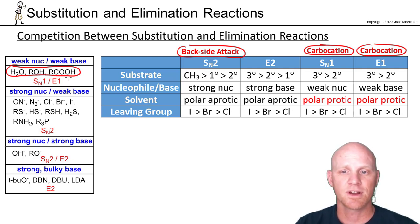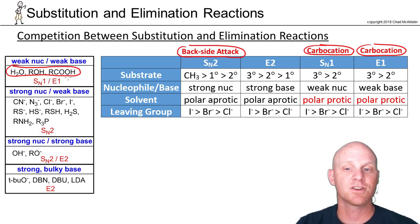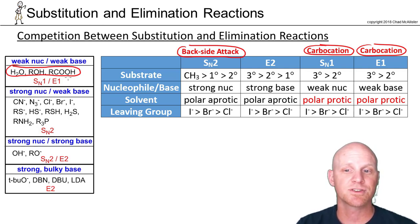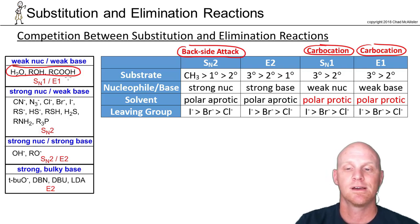Typically you have to predict a mixture of products, and it's hard to know which is major between the two — except potentially at elevated temperatures. At elevated temperatures, E1 is a little bit favored due to some entropy considerations.